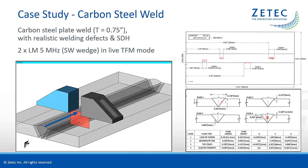The weld will be inspected with TFM from both sides in a single scanning sequence. Live TFM frames are generated from two 5 MHz 64-element linear arrays on shear wave wedges. When performing shear wave inspection with a weld cap in place, the second half skip is typically used to cover the examination volume. This is why we have selected the TT-TT wave mode for generating the TFM frames.